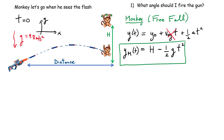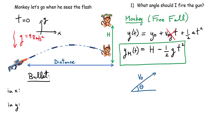Now we need equations of motion for the bullet — both in the x and y directions. I'm launching the bullet with some initial velocity v₀ at some angle θ with respect to the horizontal. That's the angle I'm trying to find. I'll break down the initial velocity into components: v₀y = v₀ sin θ and v₀x = v₀ cos θ. I'm going to need both of these to write the equations of motion for the bullet.